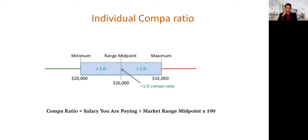You'll often hear the term 'compa-ratio' used in companies. Compa-ratio means how close you are to being paid at the midpoint for your position — it's your compensation divided by the market midpoint, multiplied by 100. A compa-ratio of 1 means you're right at the midpoint; less than 1 means below the midpoint; more than 1 means you're paid above midpoint. While many companies have moved away from compa-ratios toward more complex approaches, it's still a very good number to understand.